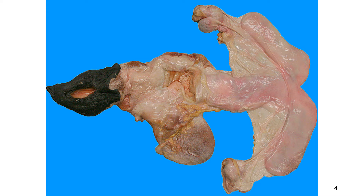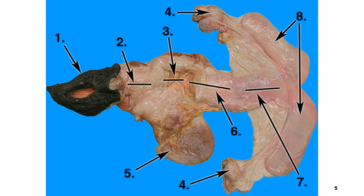This is the dorsal view of the Mare Reproductive Tract. These are the structures that can be found in the Mare Reproductive Tract as shown in the figure. From the outside, number one is the vulva. Number two represents the posterior vagina. Number three is the anterior vagina. Number four is the ovary. Number five is the urinary bladder. Number six is the cervix. Number seven is the uterine body. And number eight is the uterine horn.